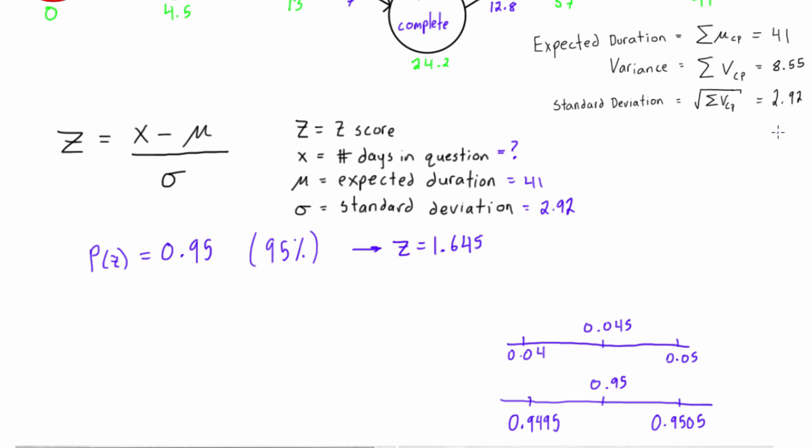Let's maybe switch colors so we can see what's going on. We'll use this equation: z equals (x minus μ) over σ. We know what z is: 1.645 is equal to (x minus 41) all over our standard deviation which is 2.92.